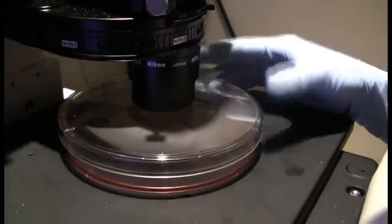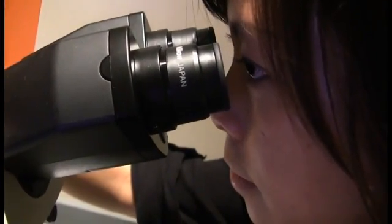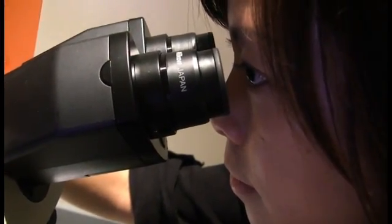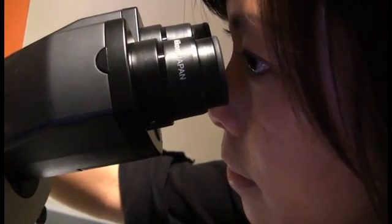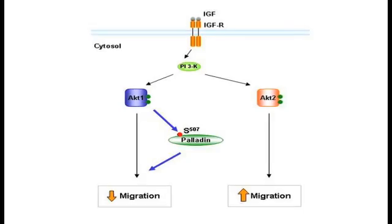Our new research has identified a gene known as paladin that helps to maintain tumor cells in their place and prevents them from migrating and ultimately metastasizing to distant organs. Using a discovery-based approach which studies proteins in a cell, we identified paladin as an AKT1 target.